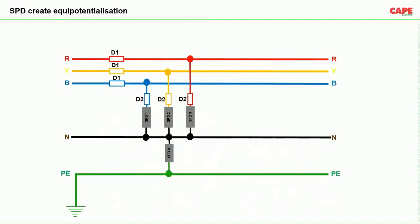Now, how do we connect an SPD in an electrical system? Suppose we have a 3-phase system — R, Y, B, neutral, and protective earth. There are two methods: a 3+1 connection and a 4+0 connection. For explanation purposes, we have taken a 3+1 connection, where 3 SPDs are connected between line and neutral, and the 4th SPD is connected between neutral and earth.